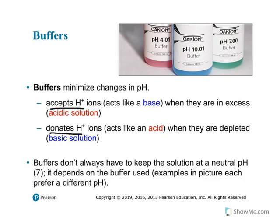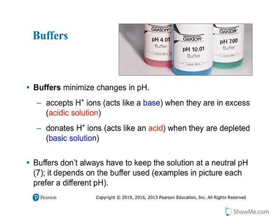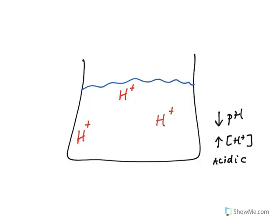this depending on the solution they're in. Let's say I have an acidic solution here - I'll draw my solution - and I have a lot of hydrogen ions floating around. That's a low pH number because I have a high number of hydrogen ions; it's acidic. A buffer in an acidic solution is going to come in and accept hydrogen ions. It acts like a base in order to maintain a certain pH range.